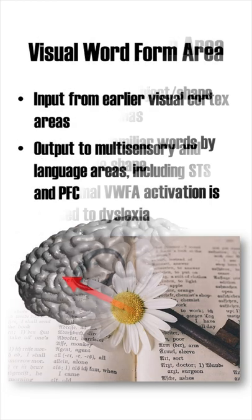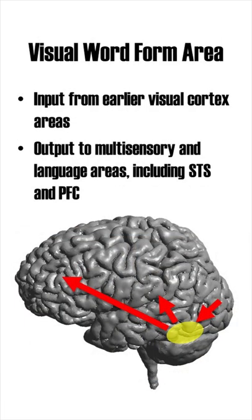The Visual Word Form Area forms a bridge between visual and language areas. It receives input from earlier visual cortical areas, while output goes towards multisensory integration areas and language areas, including the superior temporal sulcus and the prefrontal cortex.